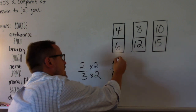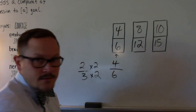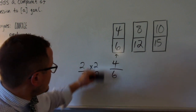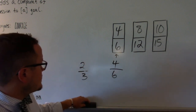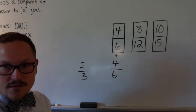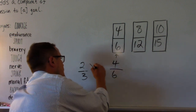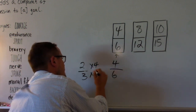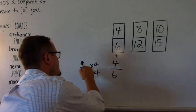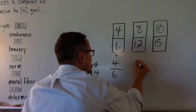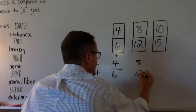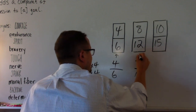So you were able to make 4/6. Then you would ask: is there something I can do in that same fashion to make 8/12? If you put in 4 — times 4 — would that make 8/12? Yes: 2 times 4 is 8 and 3 times 4 is 12, so that in fact works.